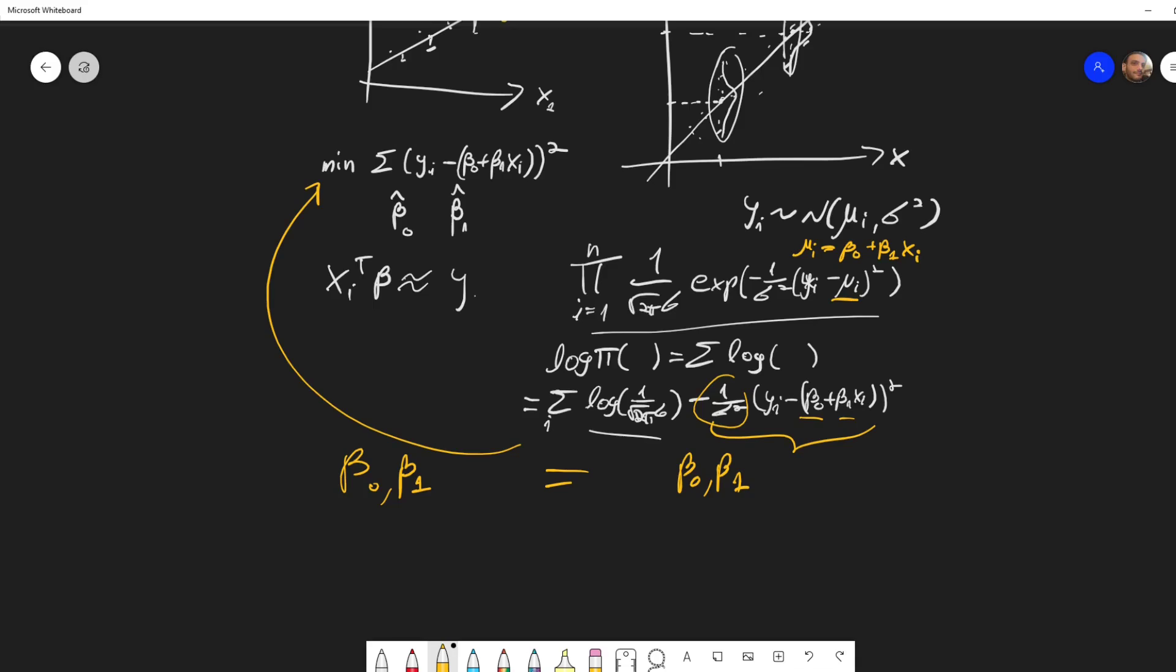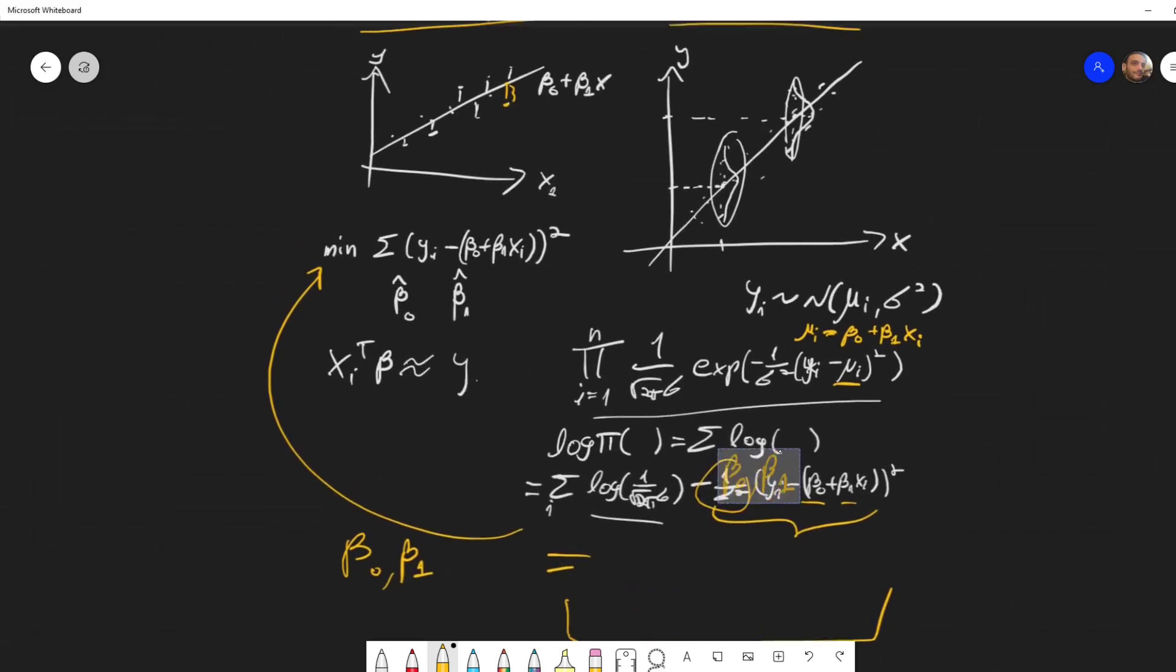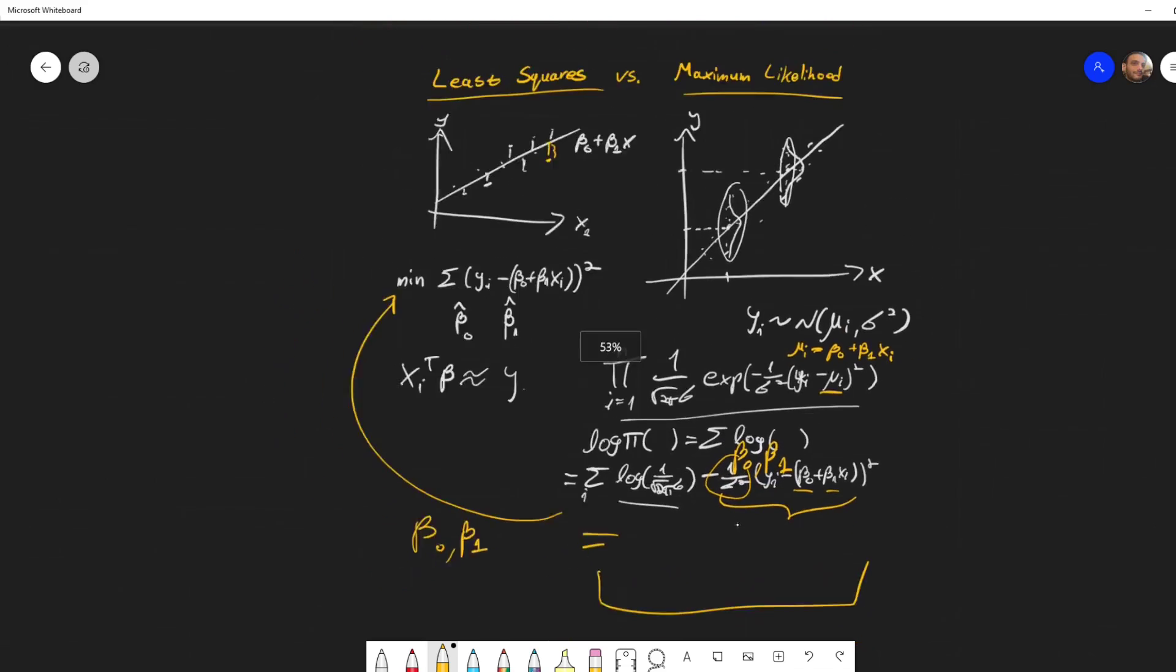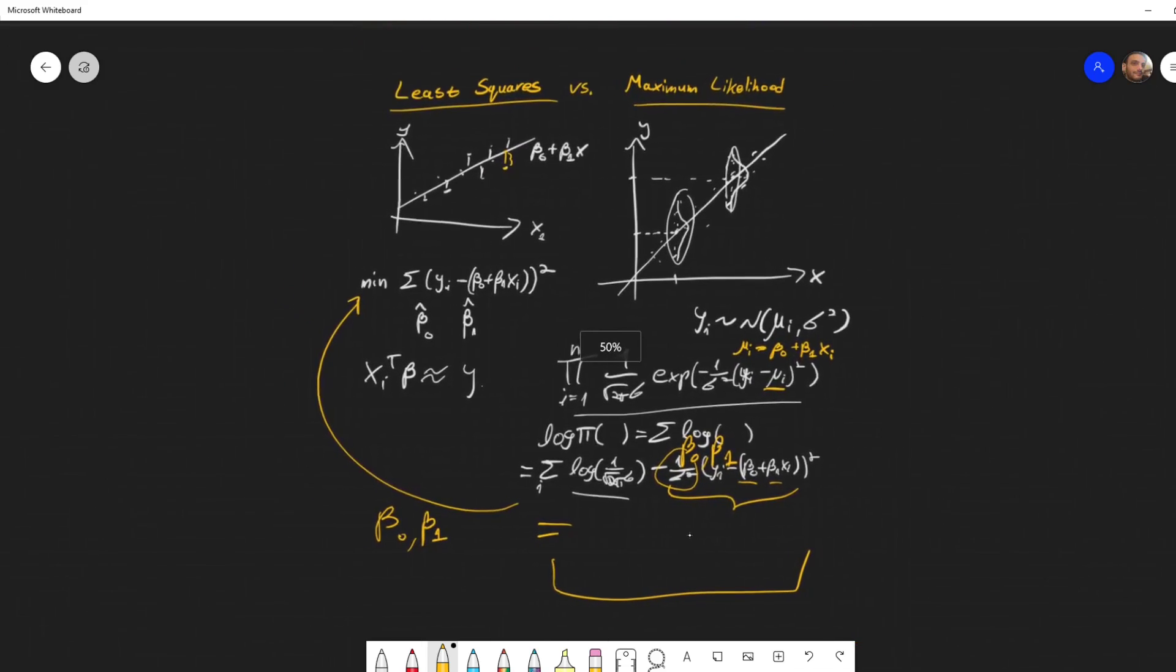But if we generalize our model, and we don't assume a normal distribution for the y's by some other distribution, say a Bernoulli distribution, a Poisson distribution, etc., then this is no longer the case. We will use this method, the maximum likelihood method to compute the values of our coefficients that will maximize the distribution.